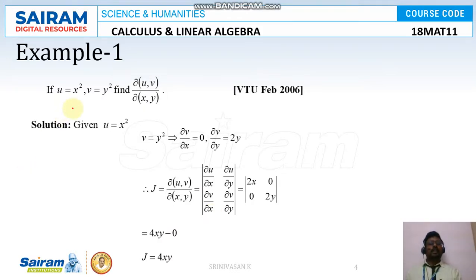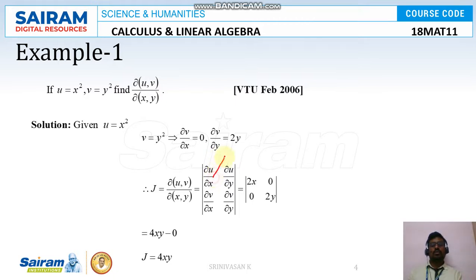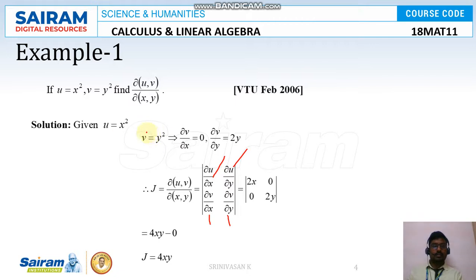Now we will discuss problems. If u = x² and v = y², find ∂(u,v)/∂(x,y). The formula requires us to find ∂u/∂x, ∂u/∂y, ∂v/∂x, and ∂v/∂y. Given u = x² and v = y², we find ∂u/∂x = 2x.